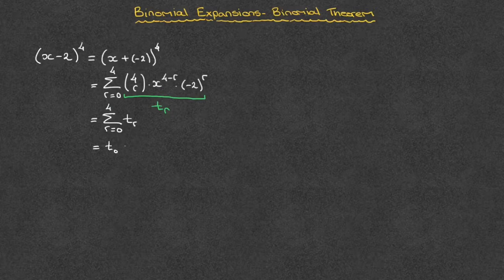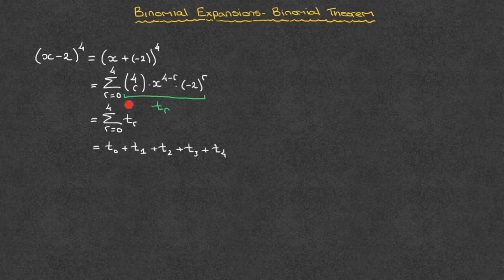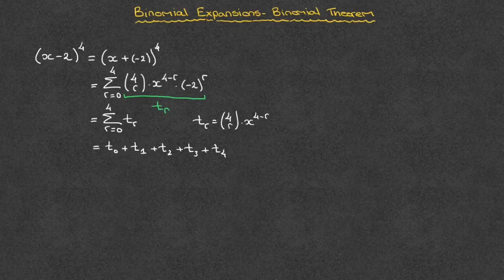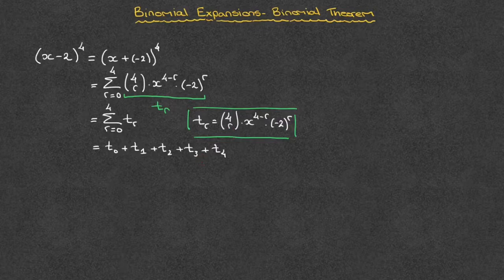This sum tells us to add all the terms obtained by replacing r by all integer values between 0 and 4 included — so that would be t0 plus t1 plus t2 plus t3 plus t4. To obtain each of these terms, we look back at our general term: t(r) equals the binomial coefficient 4-choose-r, times x to the power of 4 minus r, times negative 2 raised to the power of r. For t0, we replace every r by 0; for t1 by 1; for t2 by 2; for t3 by 3; and for t4 by 4.